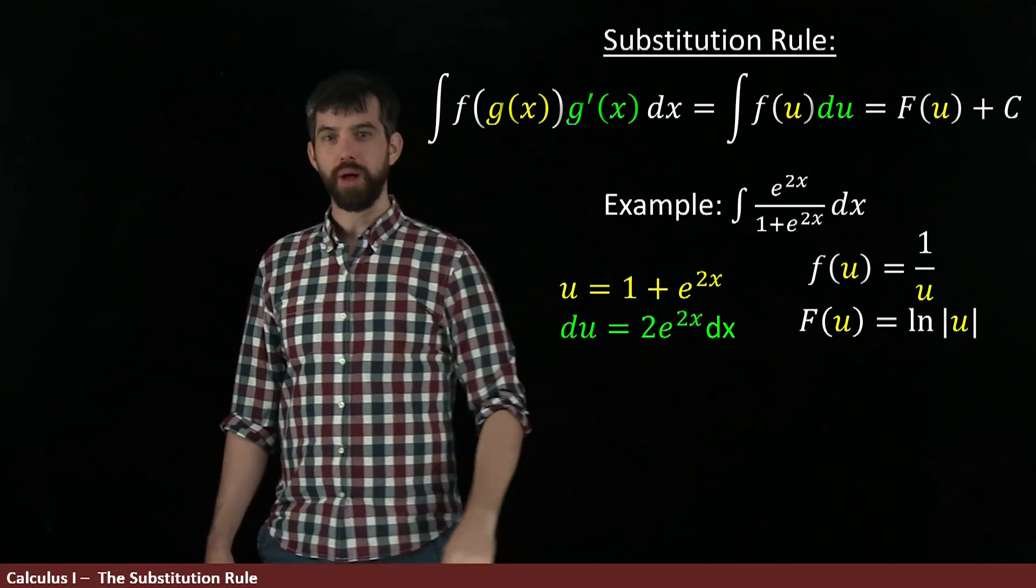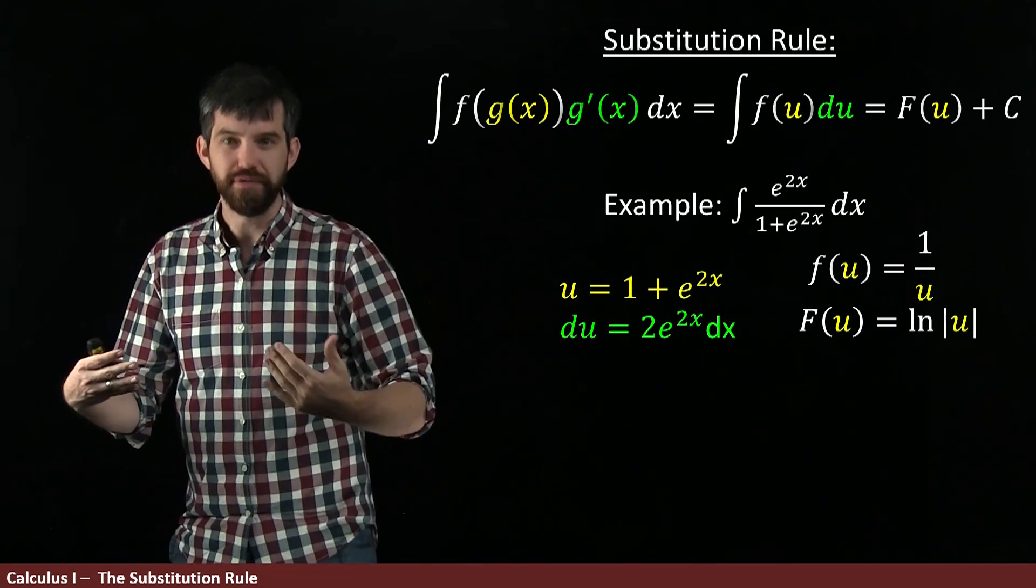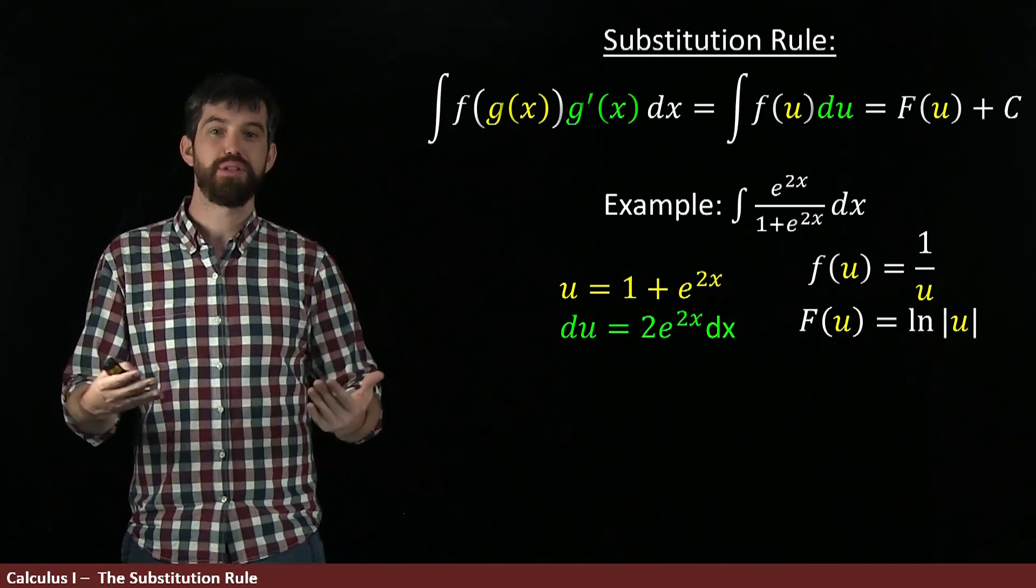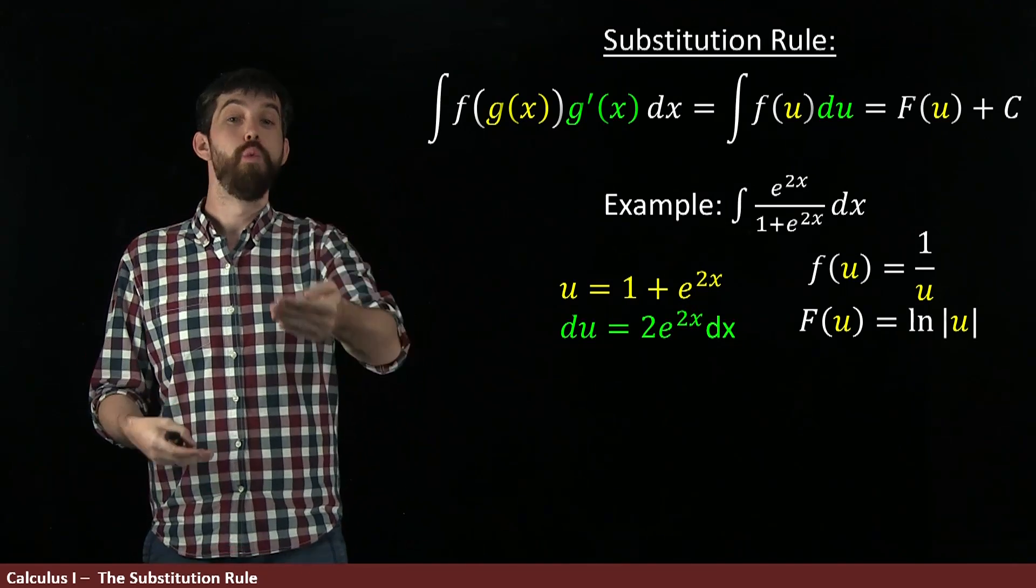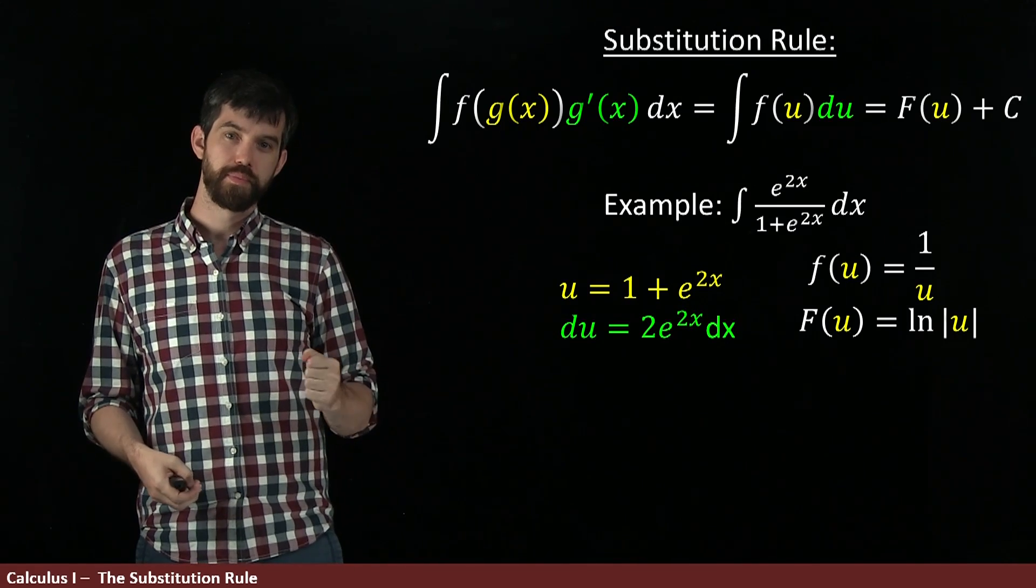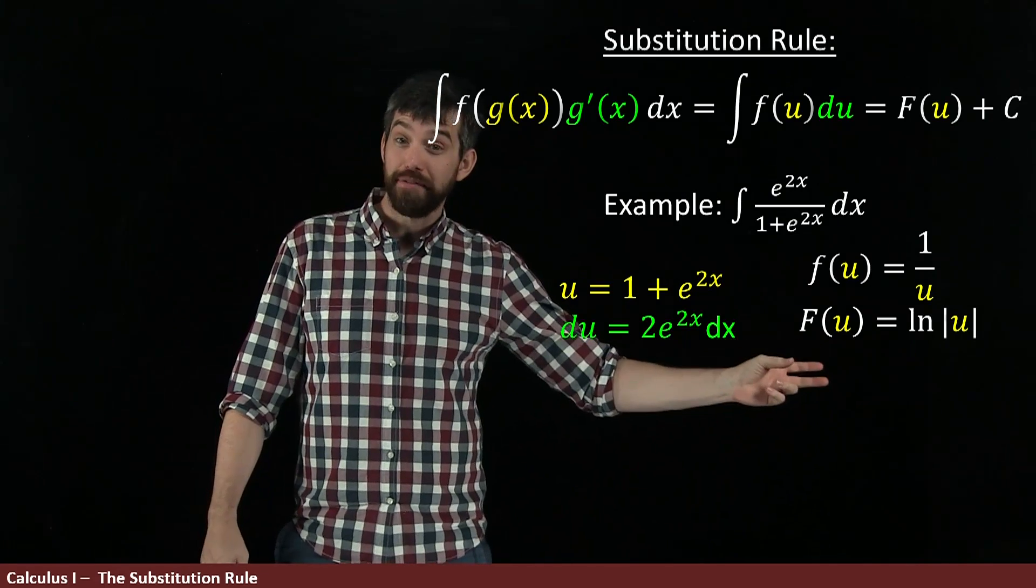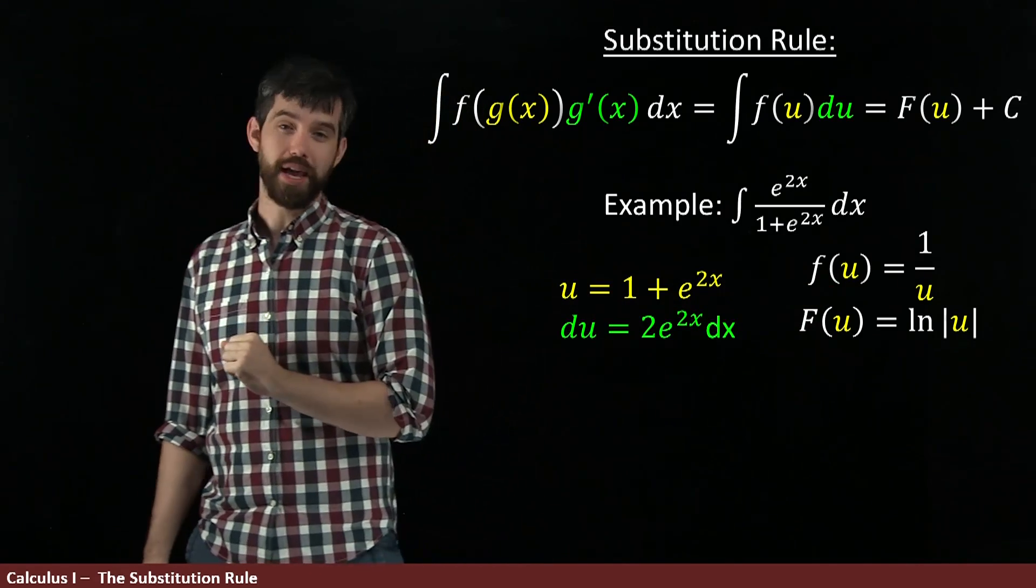Now, why is this the case? Well, if we take the derivative of the natural logarithm of the absolute value of u, we're going to get 1 divided by u. So, indeed, capital F is an anti-derivative of the lower case f.